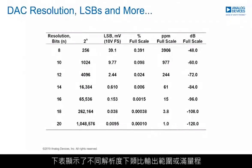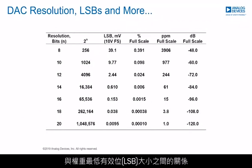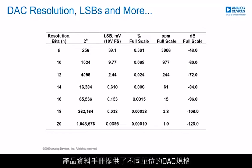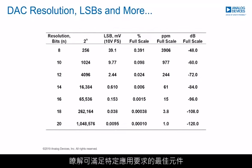This table shows the relationship between the analog output range, or full-scale, and the least significant bit (LSB) size for different resolutions. The full-scale in this case is 10V. Product datasheets present DAC specifications with different units, so this table helps compare the performance of several products to understand the best fit for a specific application.